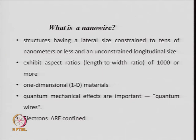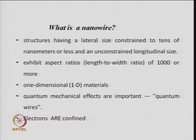For instance, 10 microns is 10,000 nanometers; if the diameter is 10 nm, the aspect ratio is 1000. Typically the length-to-width ratio is of the order of 1000 or more, though it can be smaller for short nanowires. These are classified as one-dimensional materials because of the constraint along two dimensions — only in one dimension is the size large.